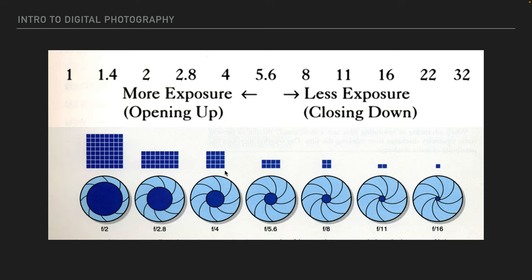It's half each time: half, half, half all the way down. So going 6 stops from F2, I end up with one unit of light — half of 64 is 32, half of 32 is 16, half of 16 is 8, half of 8 is 4, half of 4 is 2, half of 2 is 1. And if I go the other way from F16 and open up a stop, I've doubled it — and again and again all the way up. It's half or double all the way through the scale, and this works the same for ISO and the same for shutter speed.